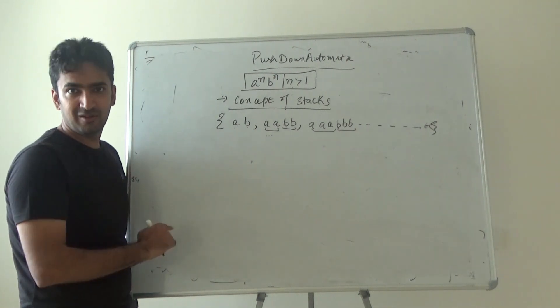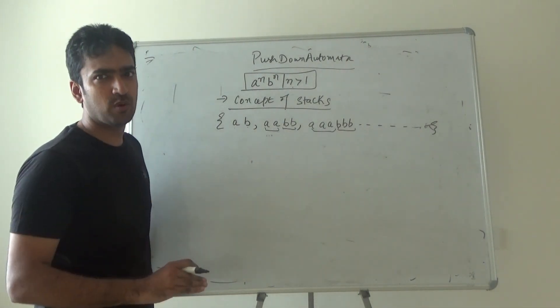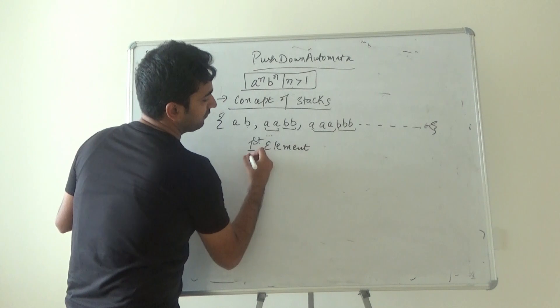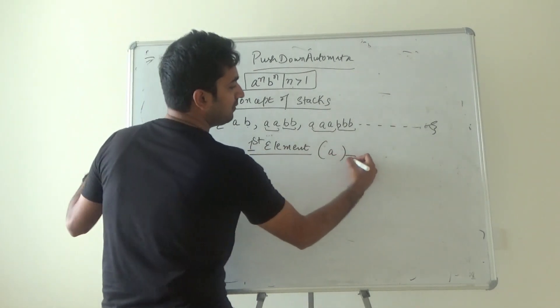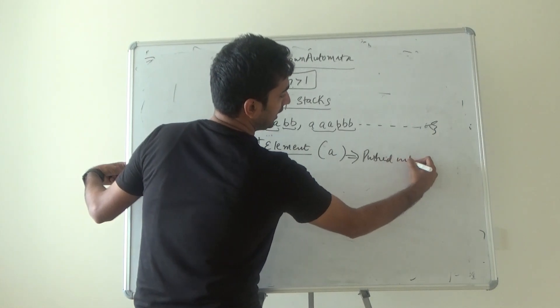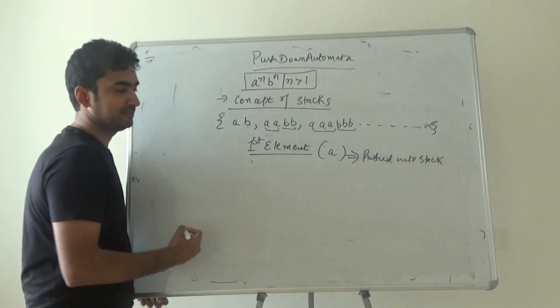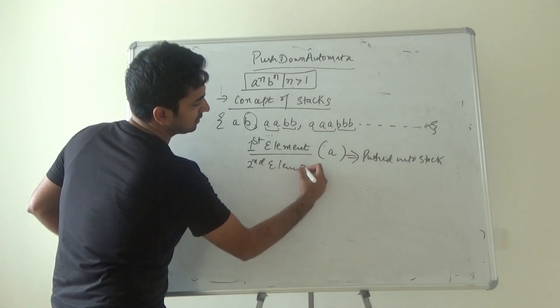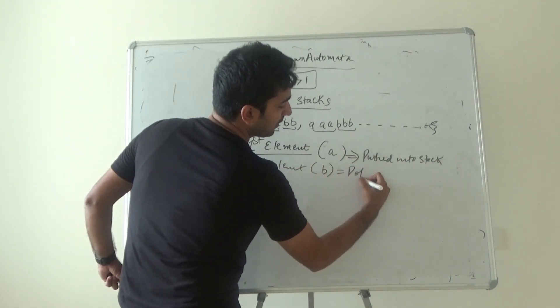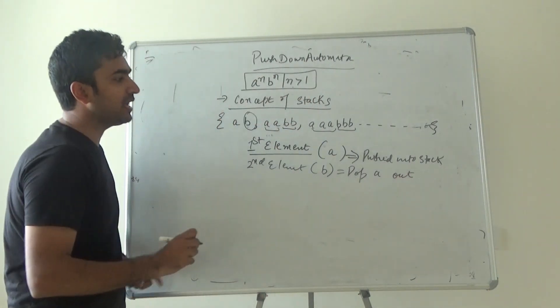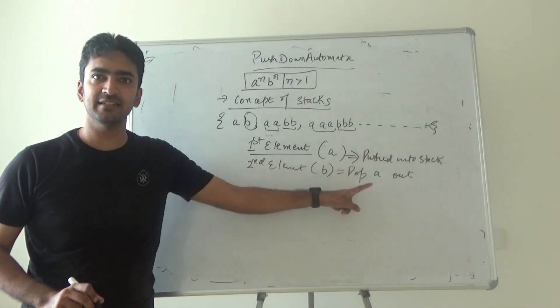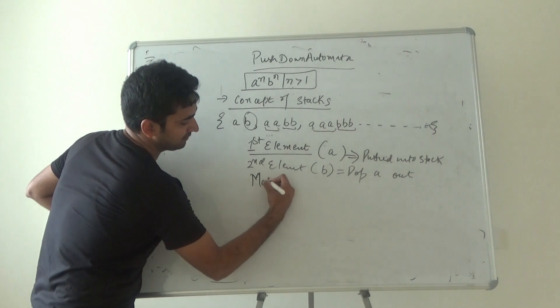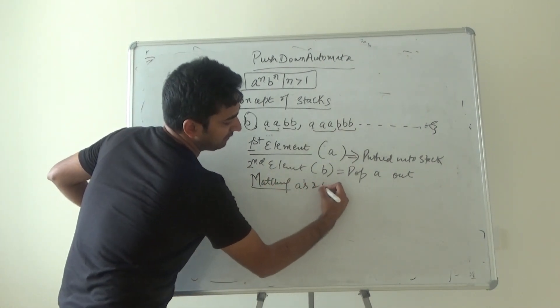It means the stack will be required. Why is stack required? Because the first element which was a will be pushed into stack, and the second element which is your b will pop a out. Why? Because it is matching a's and b's.